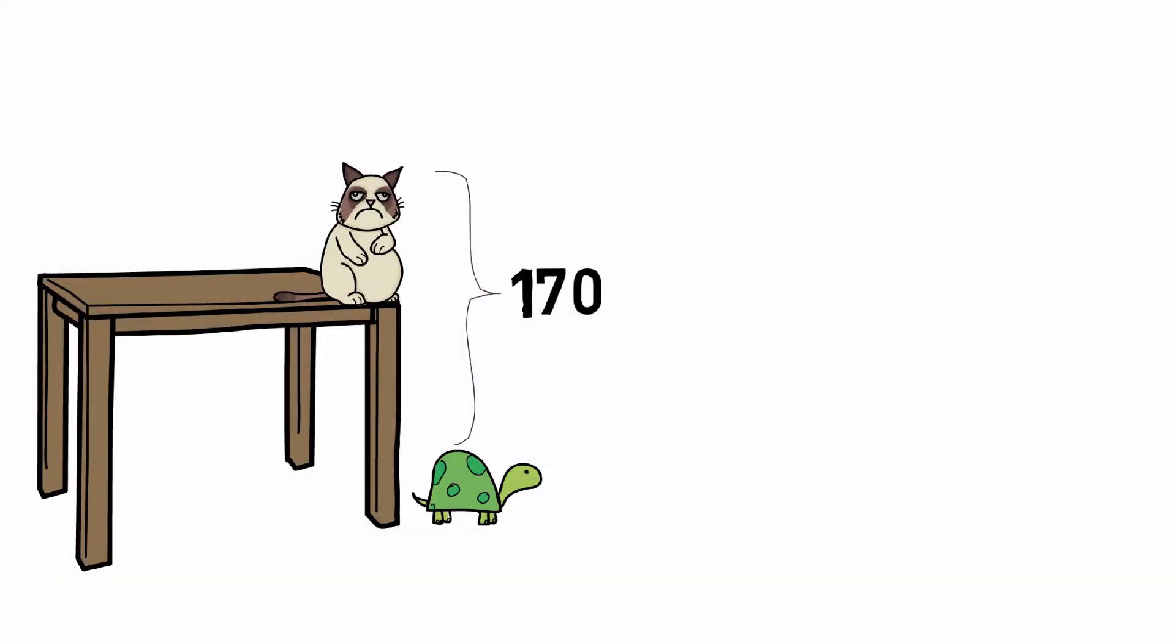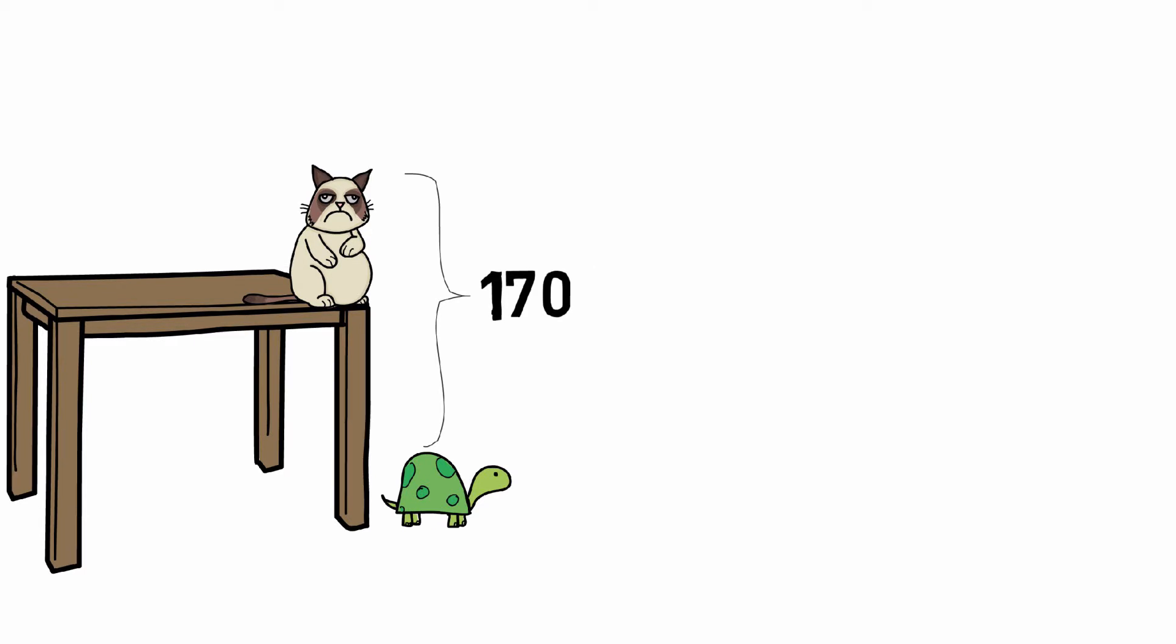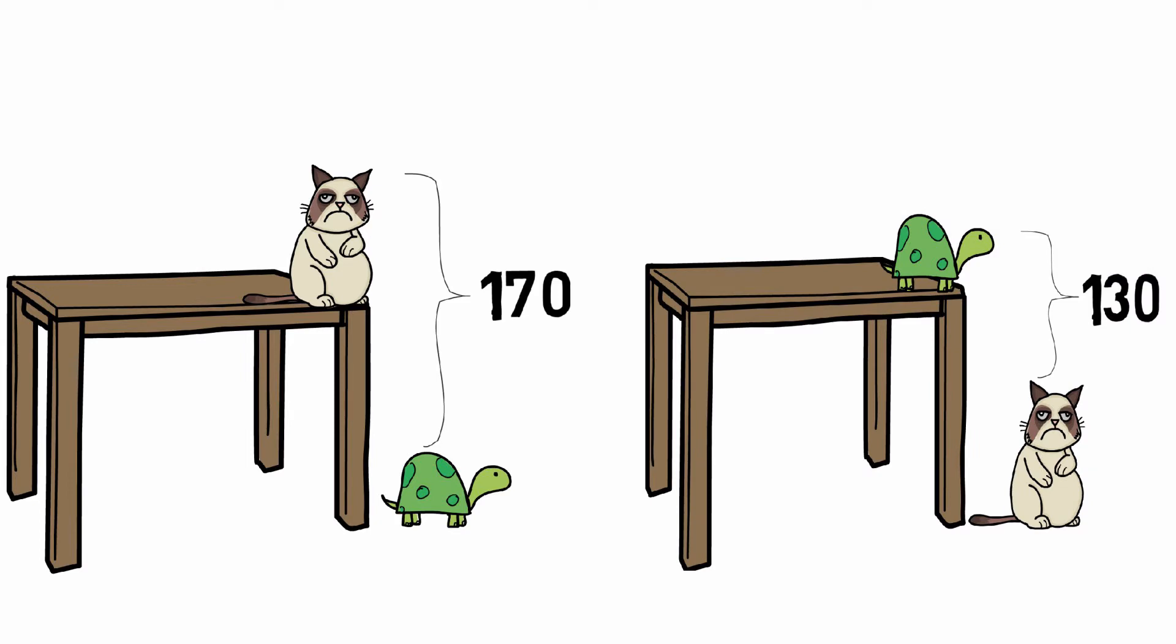We have the image on the left that shows a table, a cat, and a tortoise with a height of 170 centimeters, and then we have the other image on the right with the same cat and tortoise but interchanged and another height of 130 centimeters. Can you figure out the height of the table from these two pictures?